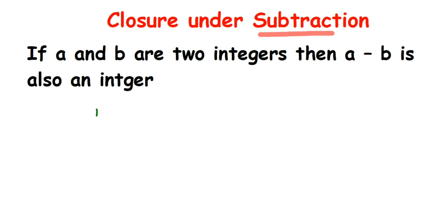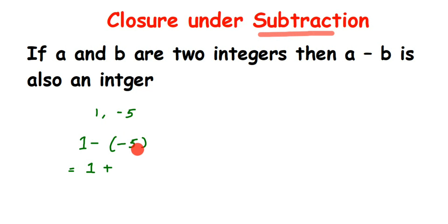I'm going to take 1 and minus 5 and subtract them: 1 minus (minus 5). Here, 1 is one integer and minus 5 is another integer. When subtracting two integers, the first integer remains the same, subtraction becomes addition, and we add the additive inverse of the second number. The additive inverse of minus 5 is plus 5.